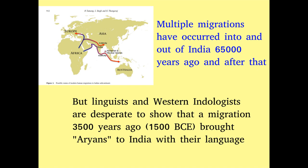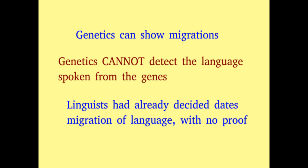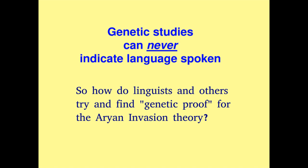But linguists are only interested in showing that there was one massive migration or invasion 3,500 years ago, around 1500 BCE, because they have already decided there must have been a migration of an Aryan race that they invented. Genetic researchers have been tasked to find evidence for this. Since genetics does not detect any language, it cannot be used to show if migrants brought any particular language to India. They instead attempt to use genetics to show the consequences of the imaginary Aryan invasion as invented by linguists.